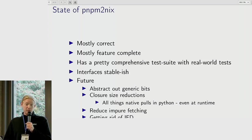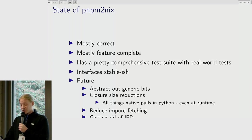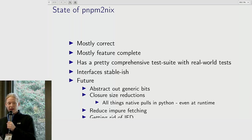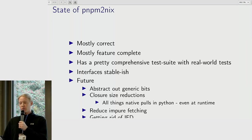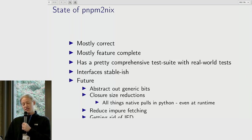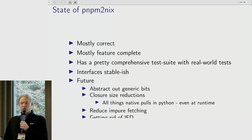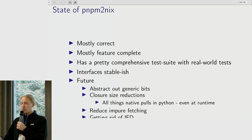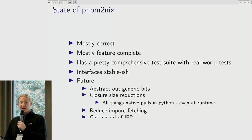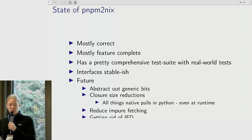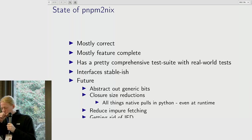Closure size reductions — as you can see, that closure was pretty hairy. All the native dependency tooling in Node.js is built with Python, and Python does get pulled into the runtime of every single closure that pulls in any native dependency. That is something I would quite like to avoid, as it's very big. The tarball resolution matching GitHub revs to tarballs is not entirely pure because PNPM upstream currently does not have checksums for those. And I would completely like to get rid of import-from-derivation — the big ticket item there is getting YAML decoding natively in Nix somehow.